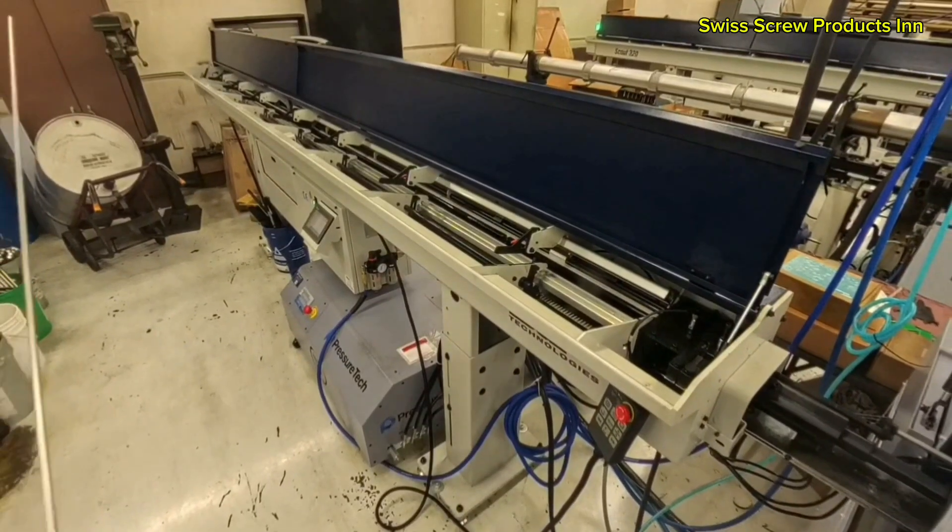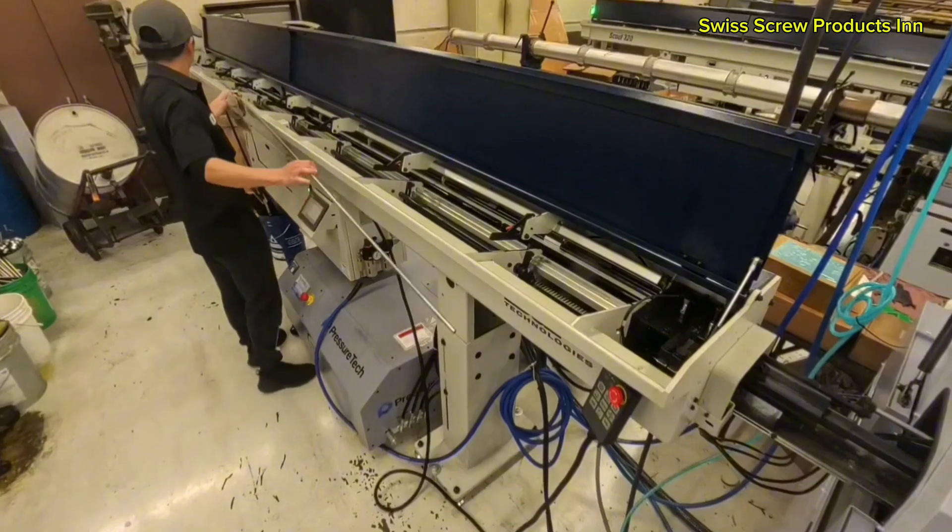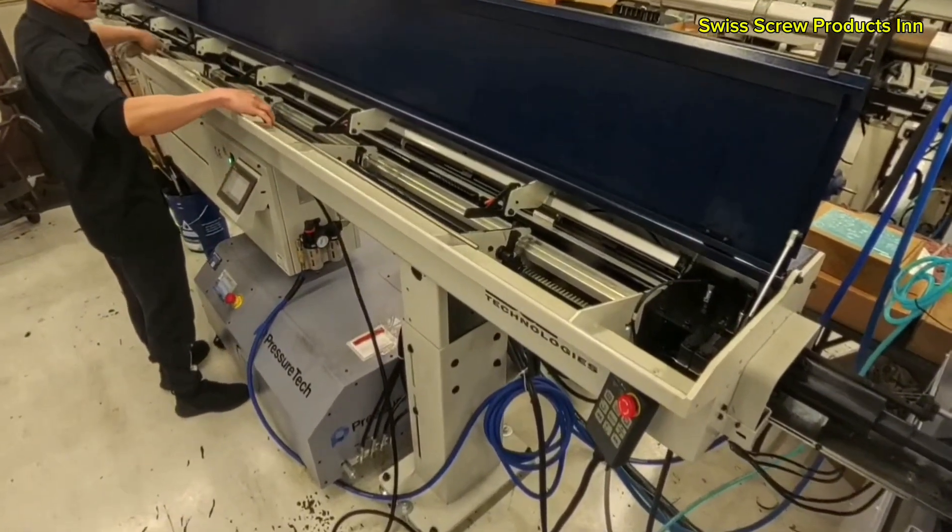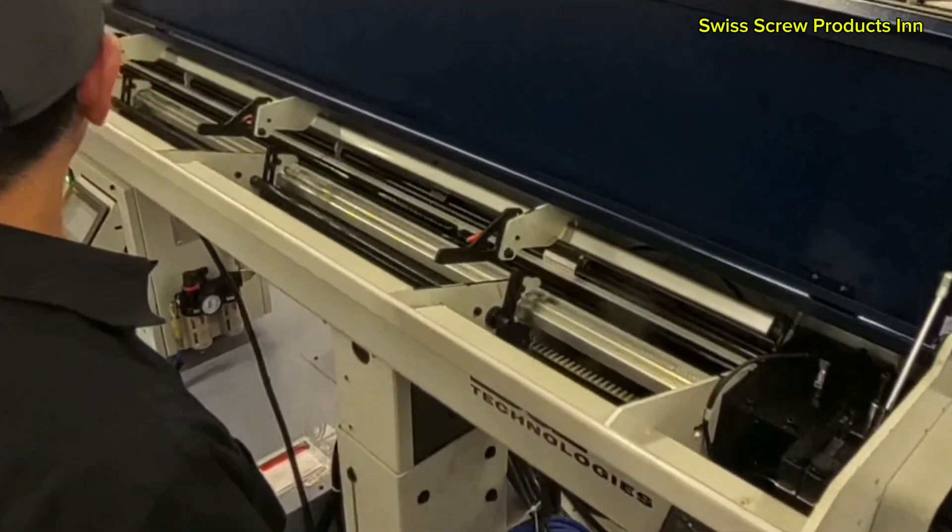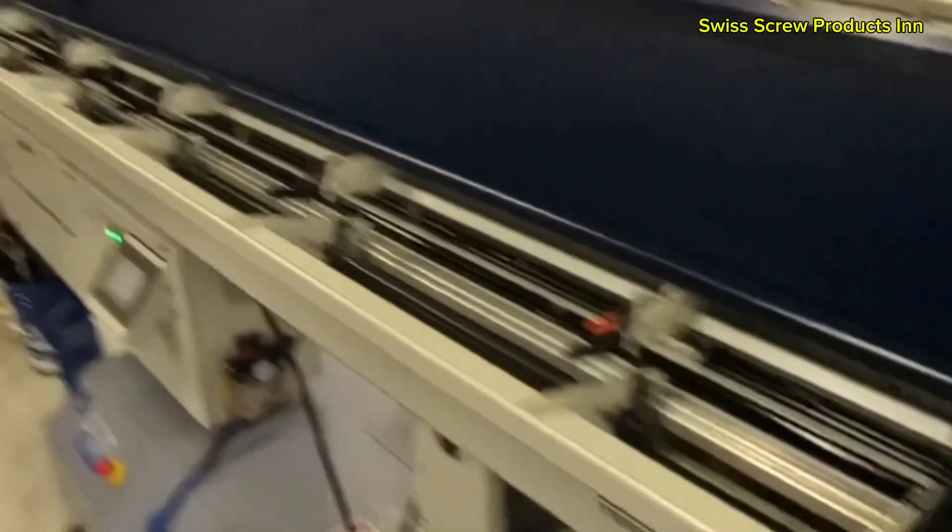Let's walk through how a Swiss screw machine operates, from raw bar to finished part. It all starts with a long bar stock, usually made of titanium, stainless steel, copper, brass, aluminum, or plastic. The material is loaded into an automatic bar feeder, which pushes the bar into the machine with precise positioning.